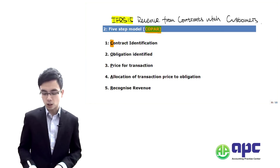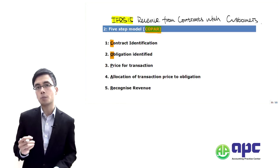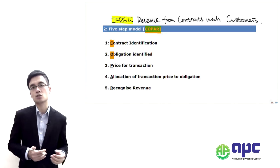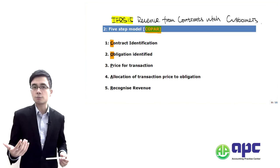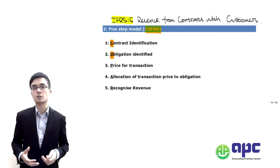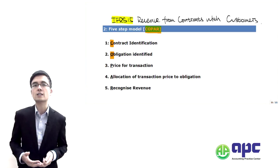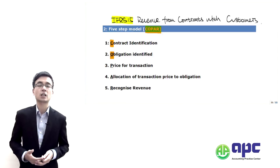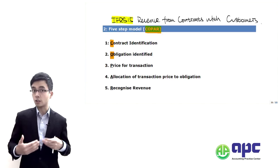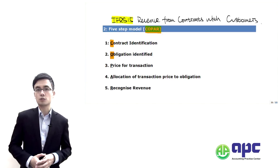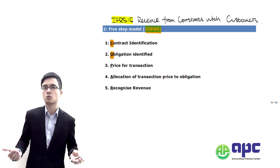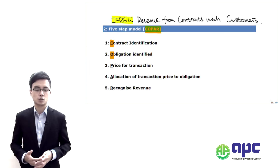After identifying the contract, we need to identify the performance obligation. Within the contract, for example in the telecommunication industry, a company may not only provide a free-of-charge mobile phone but also offer a discounted monthly rate. Alternatively, in the high-tech industry, it's not only selling software to clients but also providing maintenance or repair services after the sale.